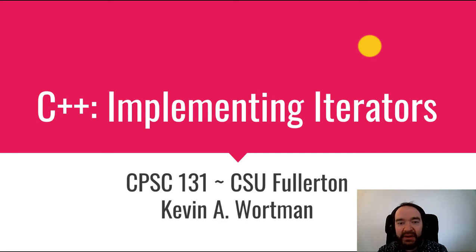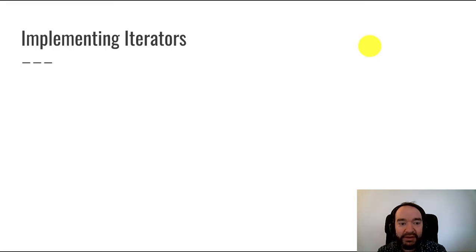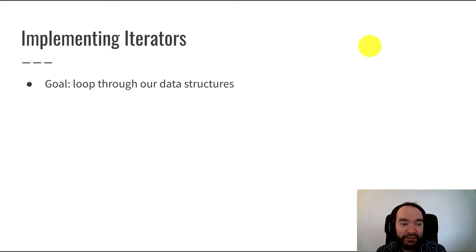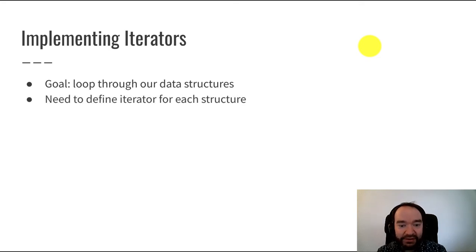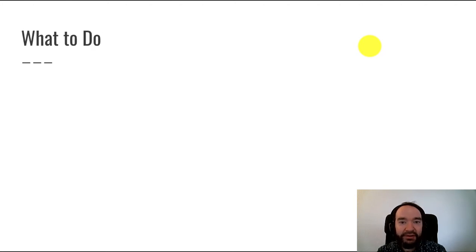Welcome. This video is on implementing iterators. A previous video described the concept of an iterator and how you use it. What we're looking at now is how you create an iterator type, and this is something we will be doing with many of the data structures we cover in this class. We're going to start with a relatively simple data structure, the pair. The goal is to create an iterator data type for a data structure so end users can loop through it. We'll first go over what's required, and then work a worked example making an iterator for the standard pair class.